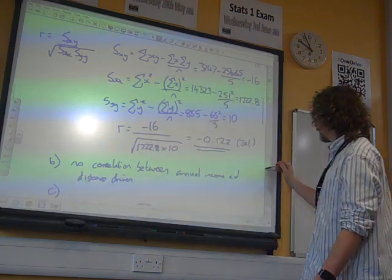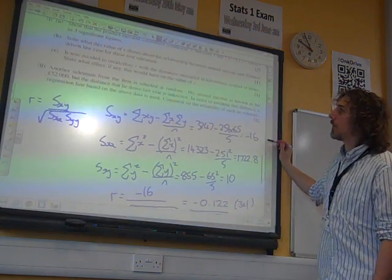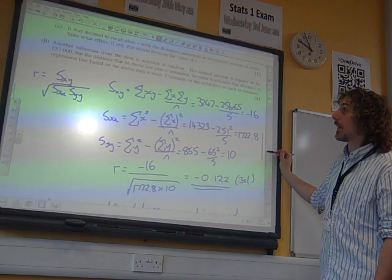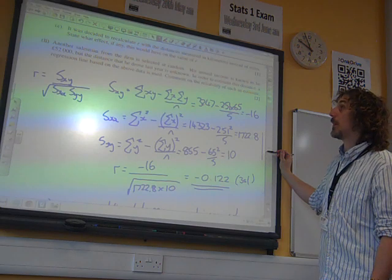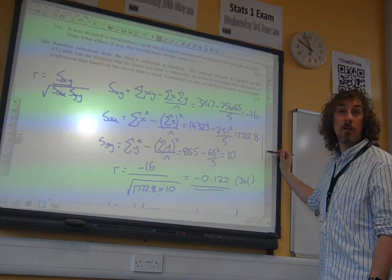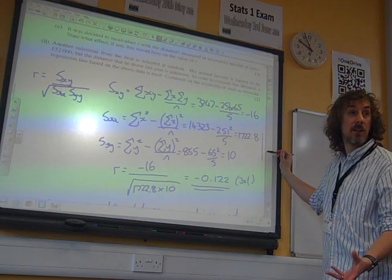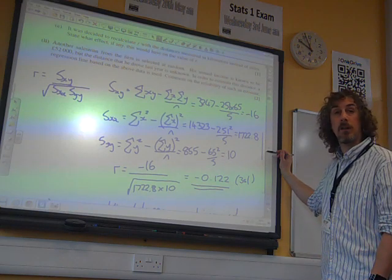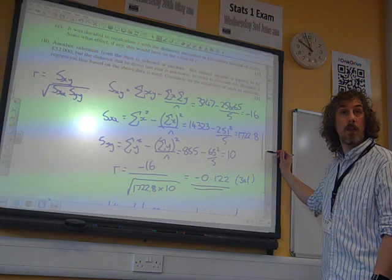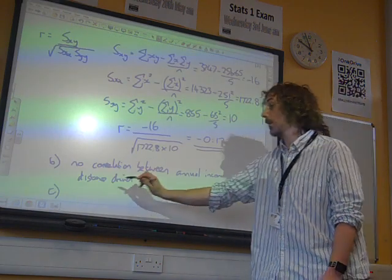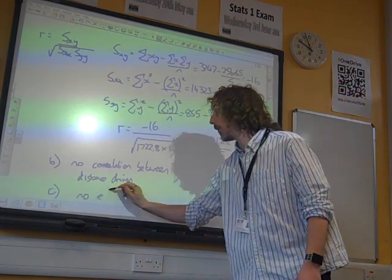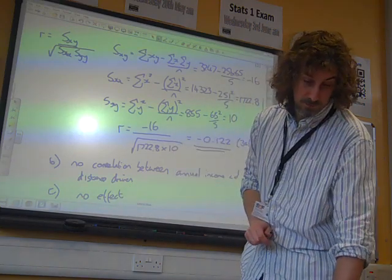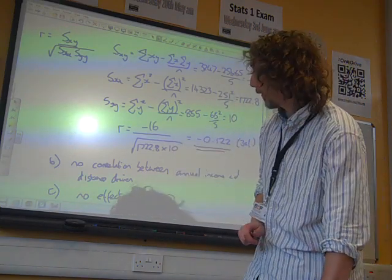Part C of this says it was decided to recalculate R with the distances measured in kilometers instead of miles. State what effect, if any, this would have on the value of R. Remember the whole principle behind this is R is independent of the units that are used in the variables. So it would have no effect at all on the value of R if we change the unit that we use. Simple as that. No effect.